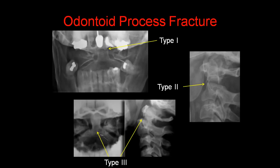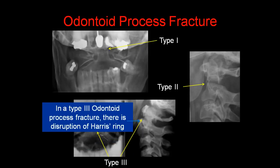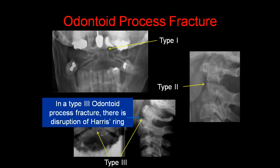Here is a diagram outlining the three types: type 1 — the tip of the odontoid process is fractured; type 2 — the base of the odontoid process; and type 3 — a low fracture which includes the body of the C2 vertebra. Note that in a type 3 odontoid fracture, there is disruption of Harris' ring, which we have previously discussed.